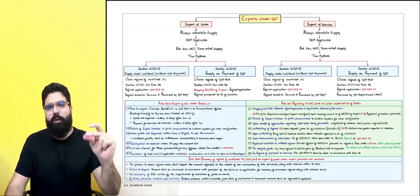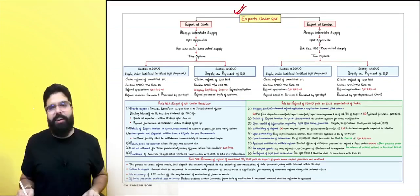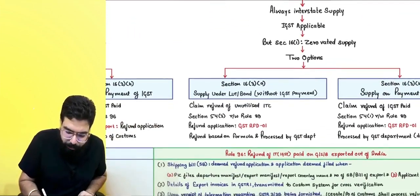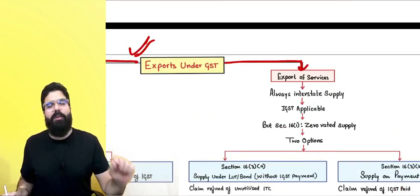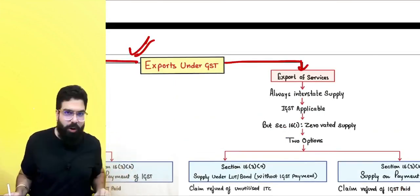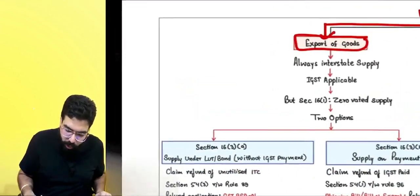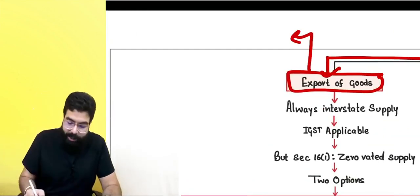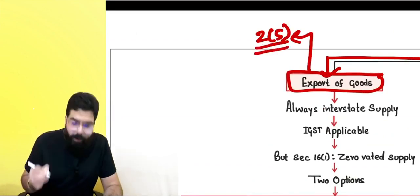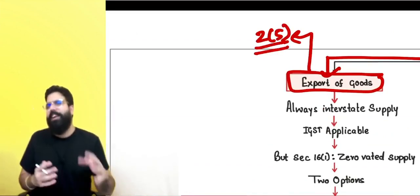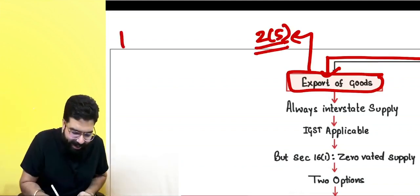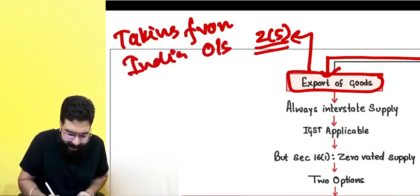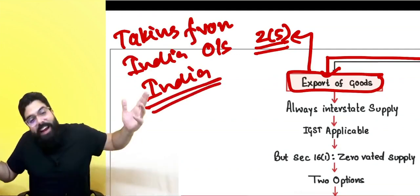The next chapter is exports under GST. Export can be of goods and export can be of services. Export of goods, as per Section 2(5) of the IGST Act, simply means taking goods from India outside India. If you take goods from India outside India, it is known as export.